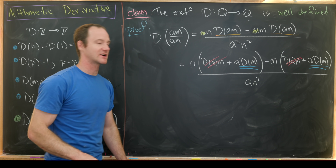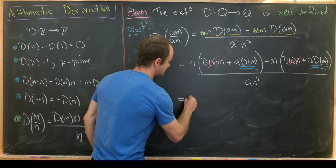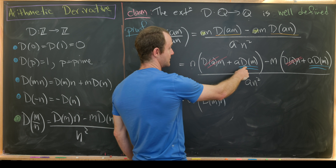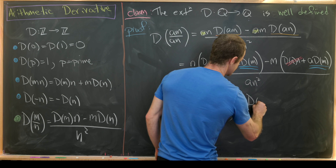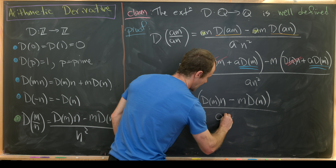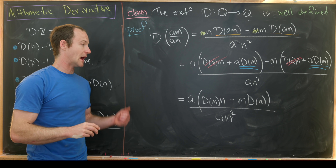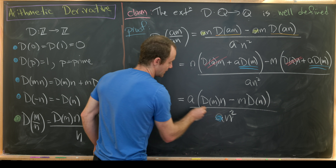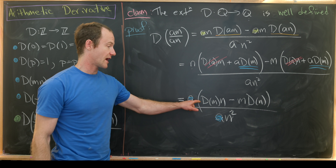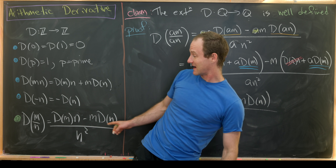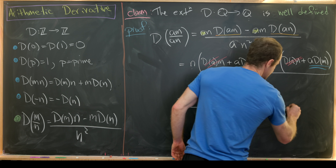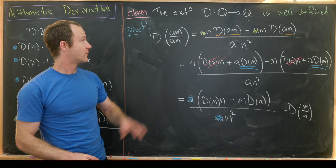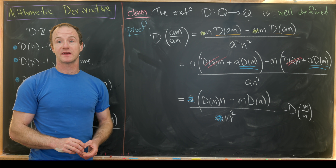Both remaining terms have a factor of a, so we factor that out to get a·(d(m)·n − m·d(n)) over a·n². Cancelling the a in the numerator with the a in the denominator leaves exactly d(m)/n² times (d(m)·n − m·d(n)), which is exactly d(m/n). This shows the extension to the rationals is well defined, and that's a good place to stop.